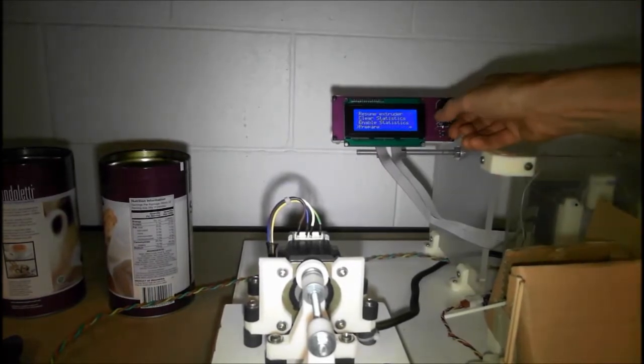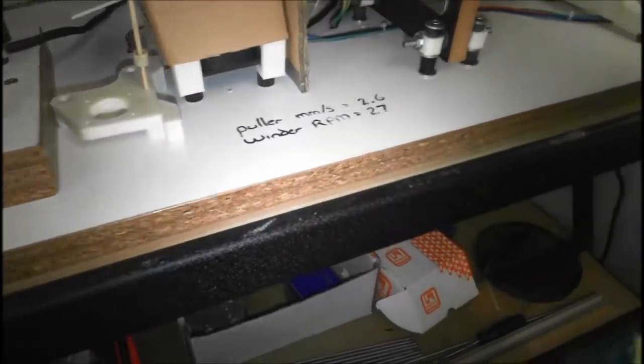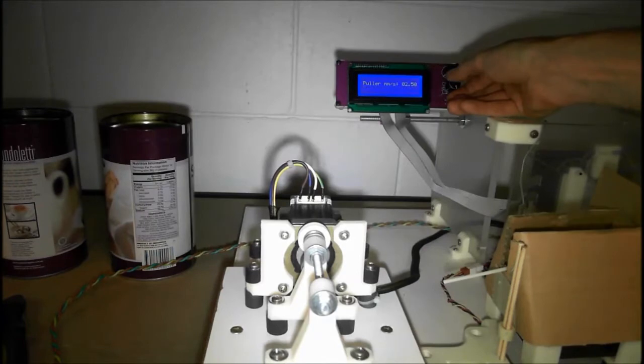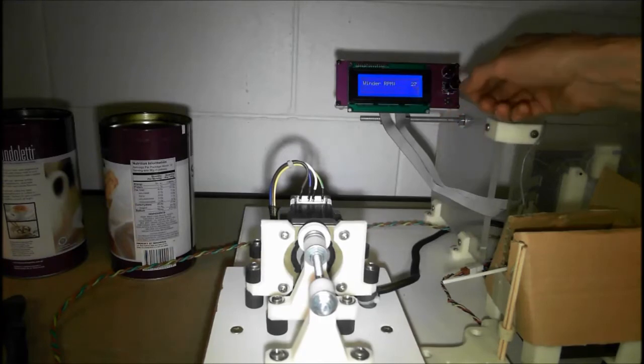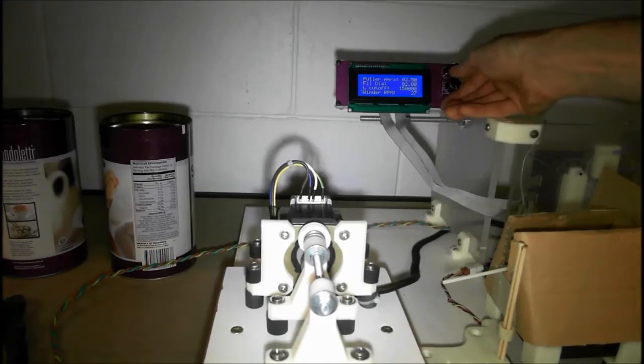Then you want to change the settings on it. So hit prepare. There's two settings you need to change. I've actually written it on the board here. Pull the millimeters per second, set it to 2.5 or 2.6. We're just testing 2.5, it makes it a little bit thicker. And wind RPM, it starts at 35, so change that down to 27. So once that's done, go back to main, and then you can test the auger.